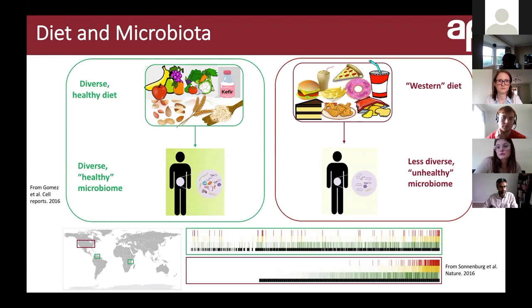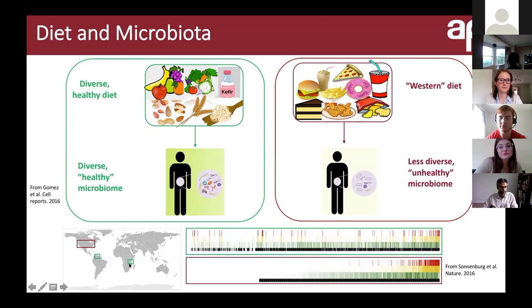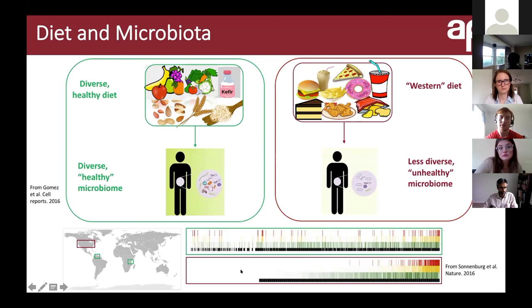This was shown when comparing people in more Westernized countries like the United States versus people in countries that rely more on agriculture, such as South American or African countries. In these two data boxes, each line represents a bacteria and the transparency indicates how many people in that population had that bacteria. People eating an unhealthy Western diet are missing many microbes that those with an agricultural diet have, and potentially harmful bacteria are present in higher concentrations in those eating a Western diet.